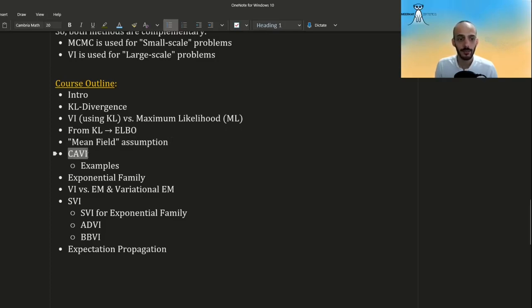Then we will spend quite some time on the CAVI algorithm, how to derive it and see some examples of it. We will then focus on the exponential family and see how it can simplify the CAVI algorithm. We will study the relations between VI and the EM algorithm, the expectation maximization algorithm. It turns out that they are very closely related and also can be combined together into this hybrid algorithm called variational EM.